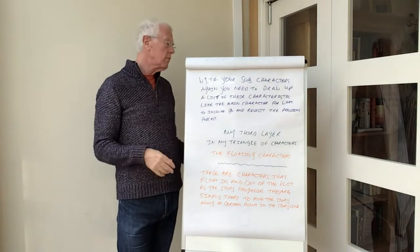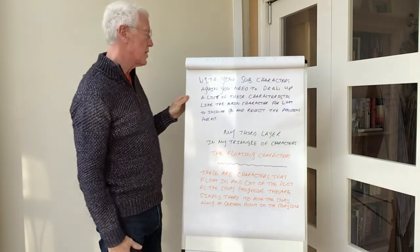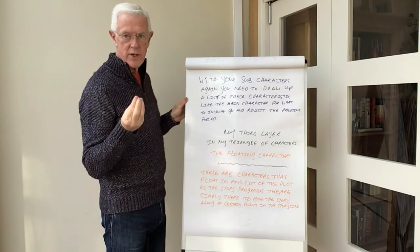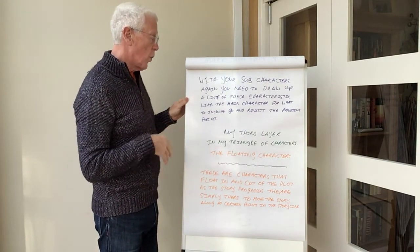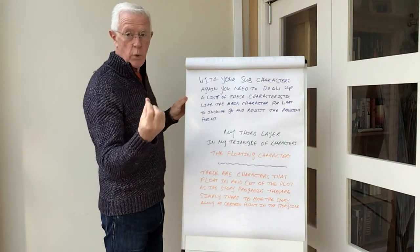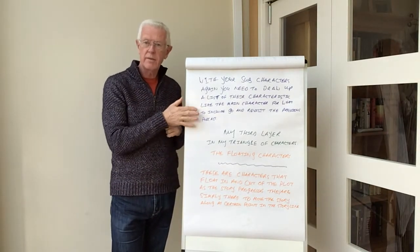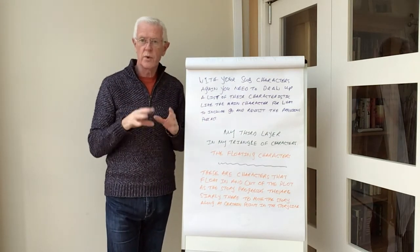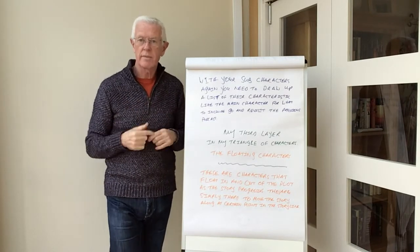With your sub-characters — your layer two characters — you need to draw up a list of their characteristics, just like the main character. For what to include, go and revisit the previous podcast. If you want to see what I use as tools for creating the main character and the sub-characters, go back to podcast one and have a look.